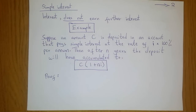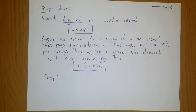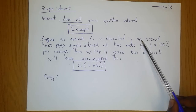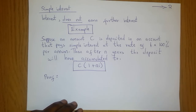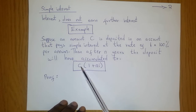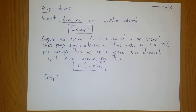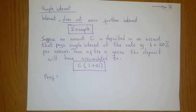Simple interest: one key feature of simple interest is that interest does not itself earn further interest. Suppose an amount C is deposited in an account that pays simple interest at a rate of i × 100% per annum. Then after N years, the deposit will have accumulated to a certain amount, where C is the amount deposited, N is the number of years, and i is the rate of interest. We assume N is an integer — so complete years like one, two, or three years — though examples with half-year periods are also possible.